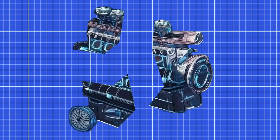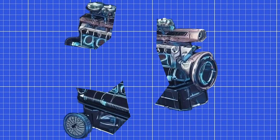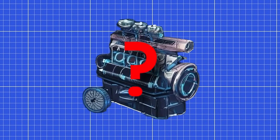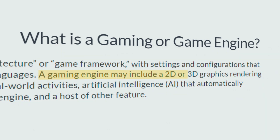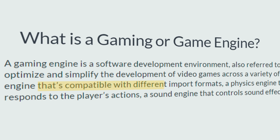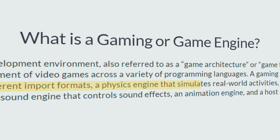But don't worry — in this video, we'll break down what a game engine actually consists of. A game engine is a software framework primarily designed for the development of video games, and generally includes relevant libraries and support programs such as a level editor. In simpler terms, it's a framework that takes in player interactions and assets as input and outputs them onto the screen with predefined logic in between.